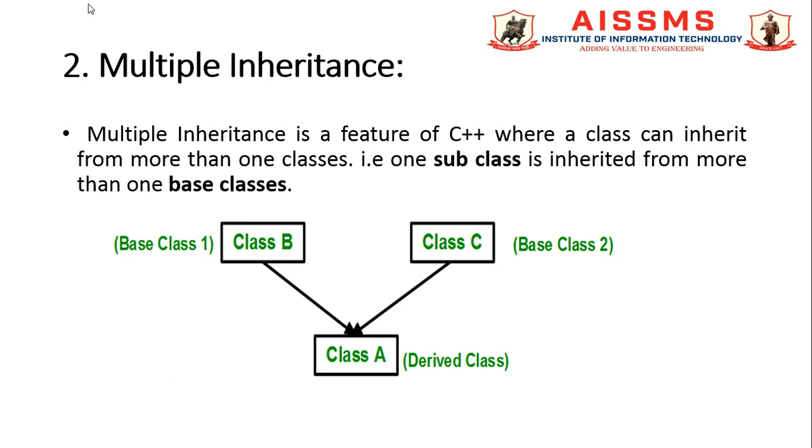Our today's topic is about multiple inheritance. Multiple inheritance is a feature of C++ where a class can inherit from more than one classes, or a child class is created from more than one base classes or parent classes. Why is it introduced? Because there is ambiguity in single level inheritance.